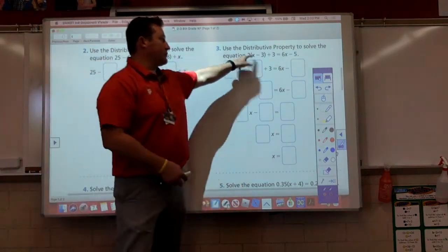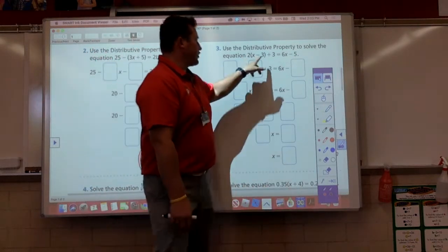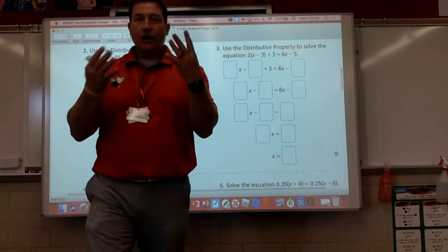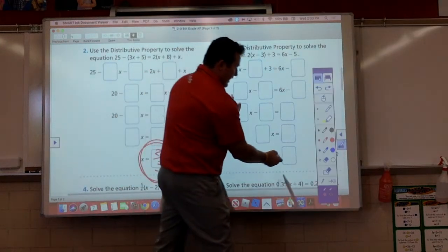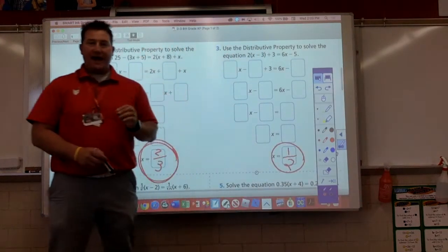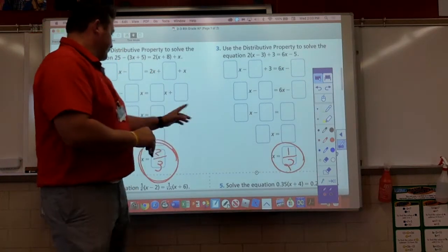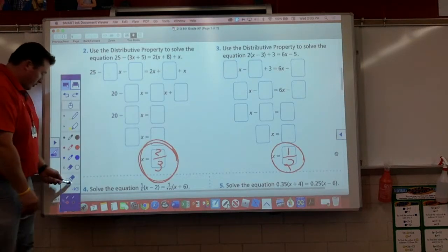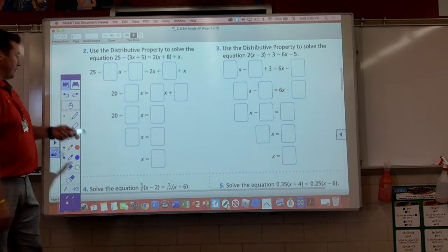Number three. Again, first step. Distribute the two. Once you do that, you're going to have some like terms that you can go ahead and combine on that side. You're going to do that. We solved everything right. We should get x is equal to one-half. We should get one-half on this one. Two-thirds, one-half. I know you guys are great on that. I'm not even going to ask how you're doing.